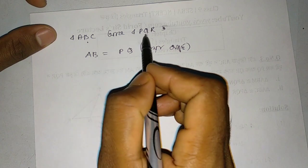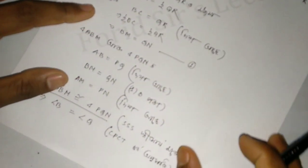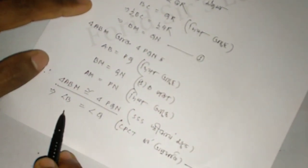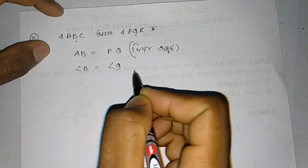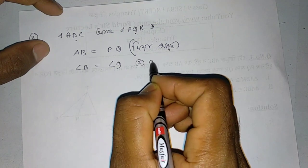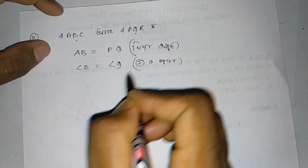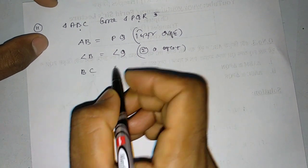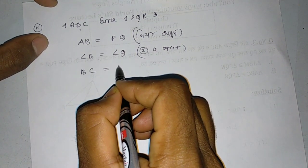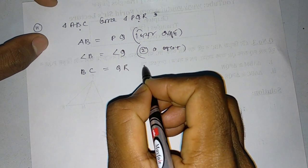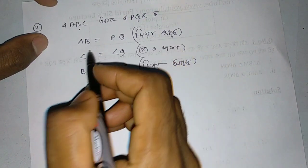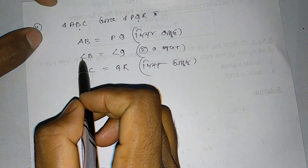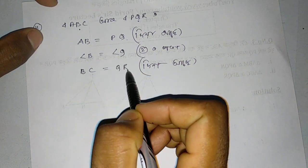Now we have angle B equal to angle Q. We established this from the previous proof. We have angle B equal to angle Q from the congruence we proved earlier.